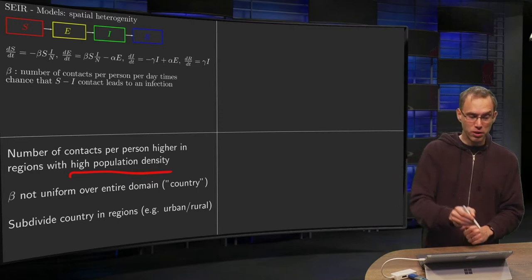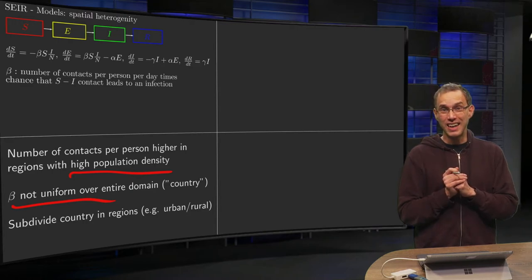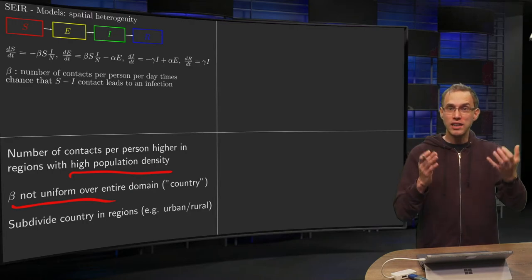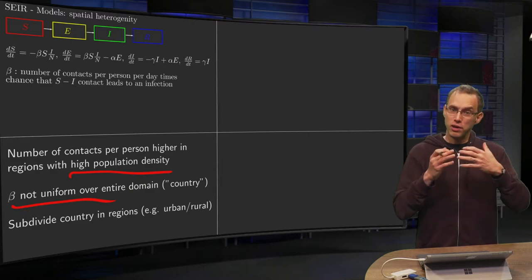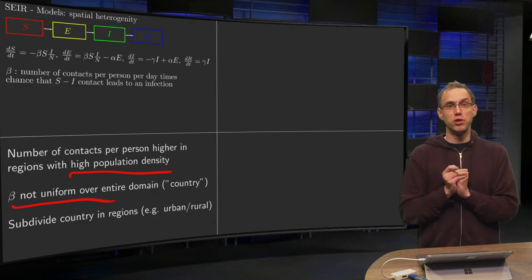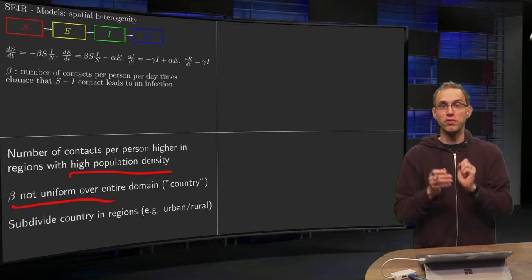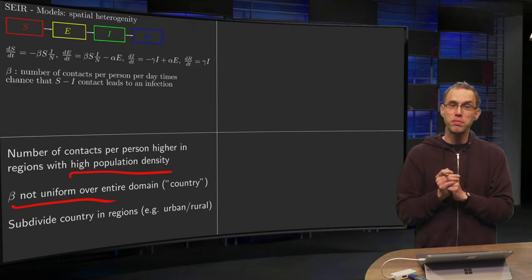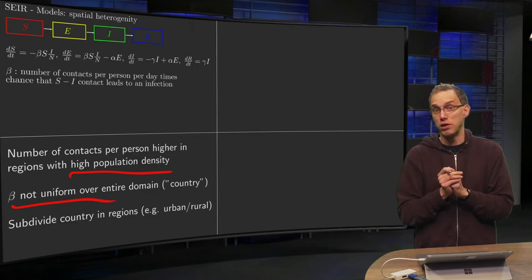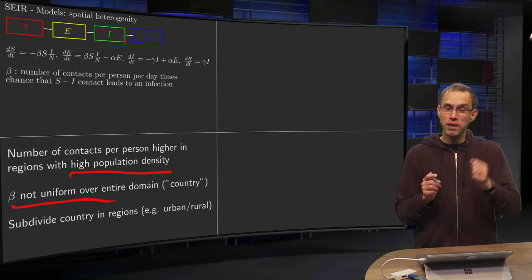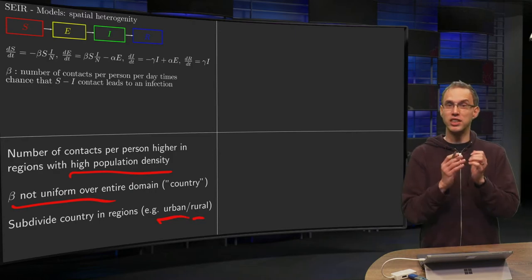This means that your beta coefficients will not be uniform over your entire domain of interest. Let's take as our domain of interest a country to be a bit more specific. We cannot treat this beta the same for all parts of the country. We should subdivide the country in several regions where the beta can be considered more or less constant. You typically think of more urban regions and more rural regions in this case.